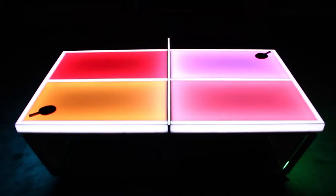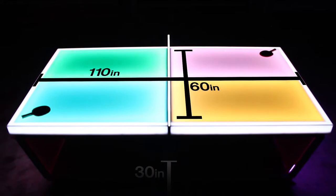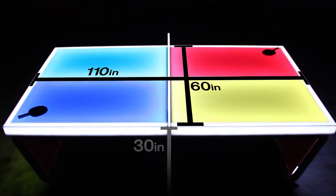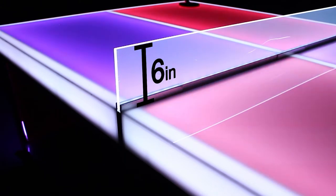This unit is official regulation size with a length of 110 inches, a width of 60 inches, and a height of 30 inches. The acrylic net is also regulation height at six inches tall.